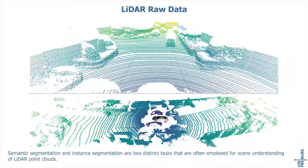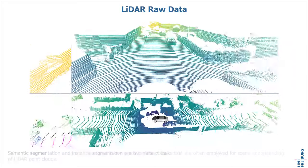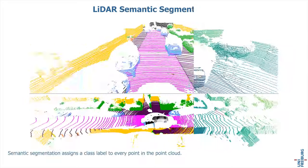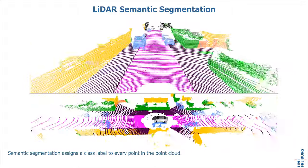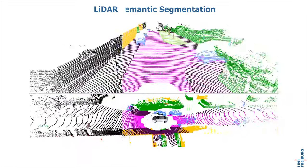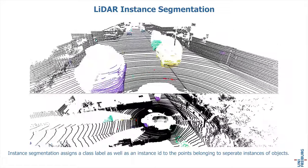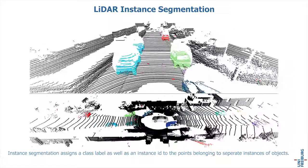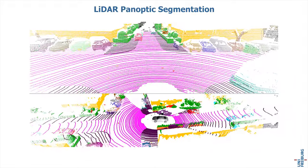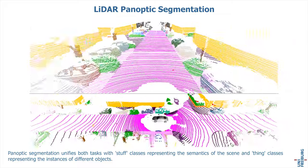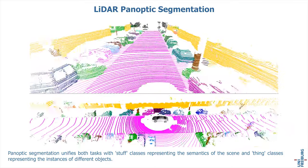Semantic segmentation and instance segmentation are two distinct tasks often employed for scene understanding of LiDAR point clouds. Semantic segmentation assigns a class label to every point in the point cloud. Instance segmentation assigns a class label as well as an instance ID to points belonging to separate instances of objects. Panoptic segmentation unifies both tasks, with stuff classes representing the semantics of the scene and thing classes representing the instances of different objects.